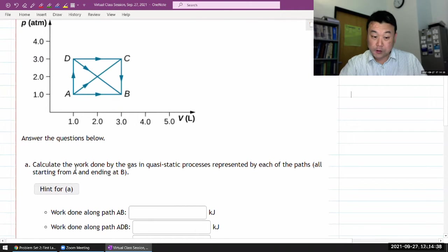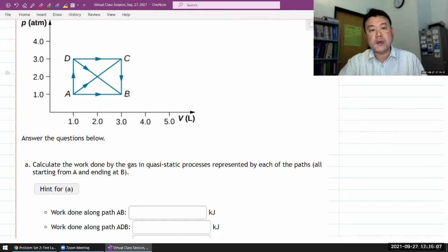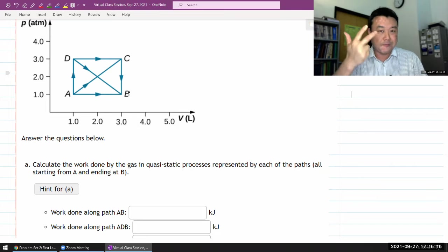It says calculate the work done by the gas in quasi-static processes. By the way, this is almost redundant. Whenever you have paths drawn in a PV diagram, they have to be quasi-static because what quasi-static means is that at every step of the way, the process happens slowly enough that there is a well-defined pressure and volume and temperature and other thermodynamic quantities.